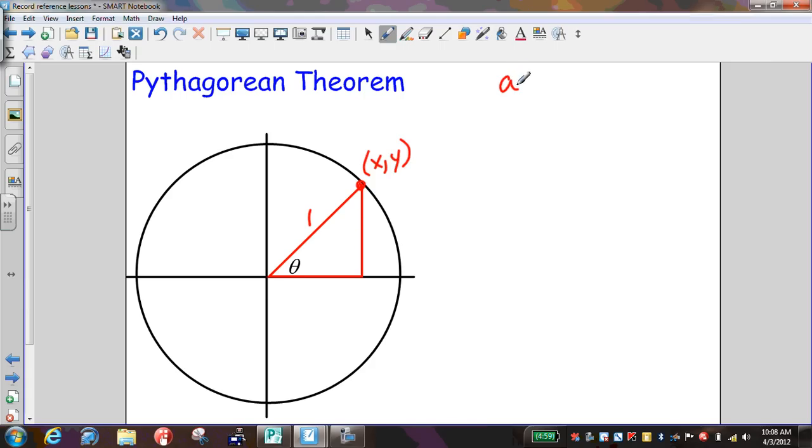Well, Pythagorean Theorem says a squared plus b squared equals c squared. In this case, what's our a value? Let's use a different color here. Our a value here is our x value, our y value here is the b, and then our c is the radius of 1.